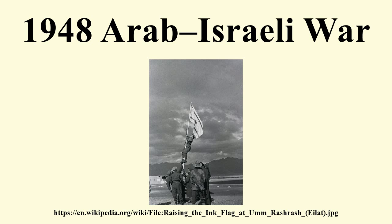The Yishuv managed to clandestinely amass arms and military equipment abroad for transfer to Palestine once the British blockade was lifted. In the United States, Yishuv agents purchased three B-17 bombers, one of which bombed Cairo in July 1948, some C-46 transport planes, and dozens of half-tracks, which were repainted as agricultural equipment. In Western Europe, Haganah agents amassed 50 65-mm French mountain guns, 12 120-mm mortars, 10 H-35 light tanks, and a large number of half-tracks. By mid-May, the Yishuv had purchased from Czechoslovakia 25 Avia S-199 fighters, 200 heavy machine guns, 5,021 light machine guns, 24,500 rifles, and 52 million rounds of ammunition — enough to equip all units, but short of heavy arms.